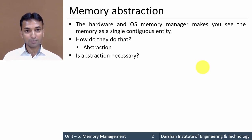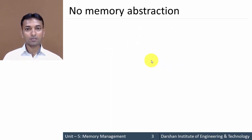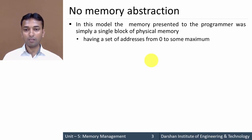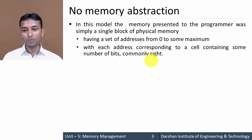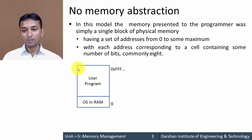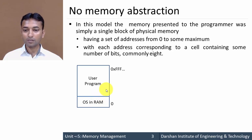So is abstraction necessary in our system? Let us see without abstraction what happens — means no memory abstraction. Suppose in our system there is no memory abstraction. In this model, the memory presented to the programmer was simply a single block of physical memory, having a set of addresses from 0 to some maximum, with each address corresponding to a cell containing some number of bits. For example, this is a memory where the operating system lies at the bottom portion and the rest is available to the user program — that is the first possibility.